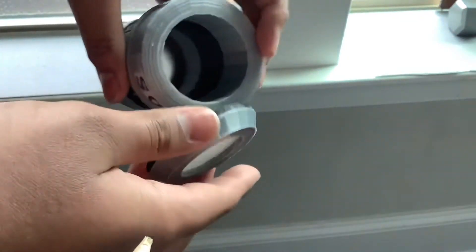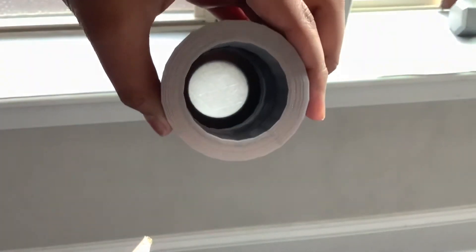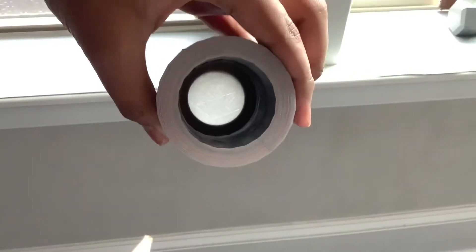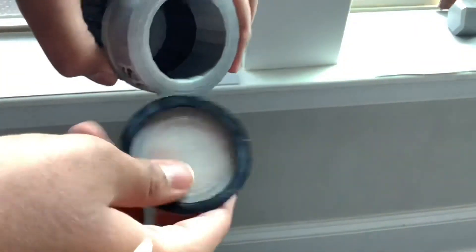But anyway, the whole lens consists of two parts. It has silver, black, and clear PLA. So there's a nice assortment of colors.